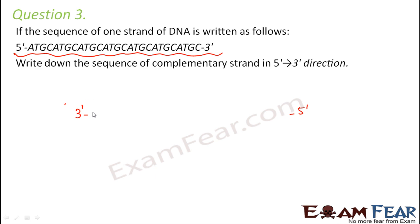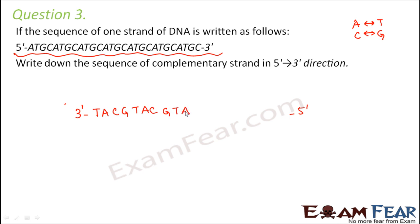A will always pair with T, T with A, C with G, and G with C. So the complementary strand follows the sequence: T-A-C-G repeating, corresponding to the original strand's A-T-G-C pattern.